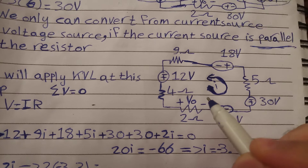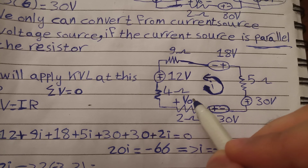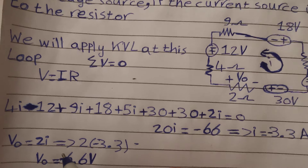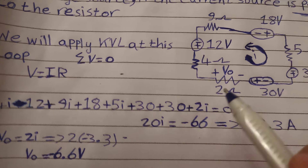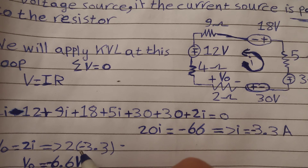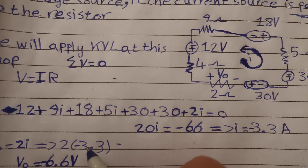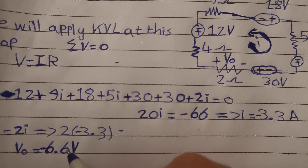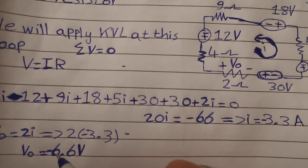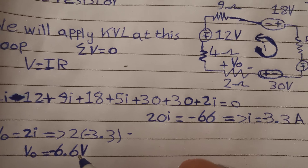Now we obtain V_node. V_node equals 2i, so V_node = 2 × (−3.3) = −6.6 volts.